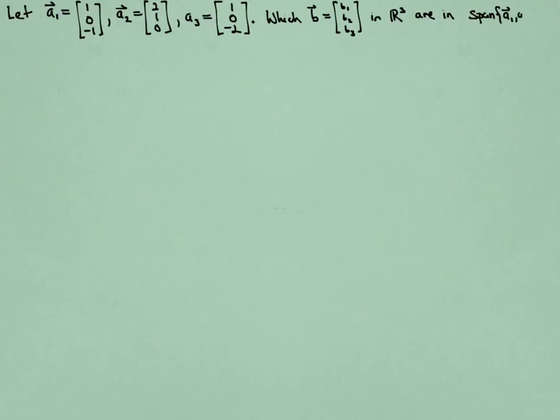We want to describe which vectors are in their span. In other words, we should take a generic vector B and ask, is it in the span of A1, A2, and A3, and try to determine any conditions that would be met by the components of this vector B, which I've called B1, B2, and B3.